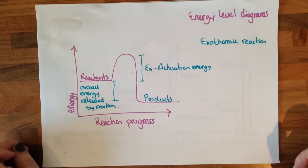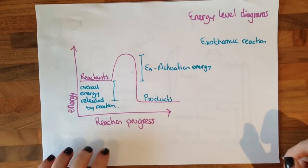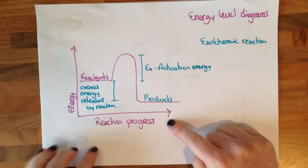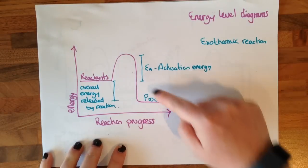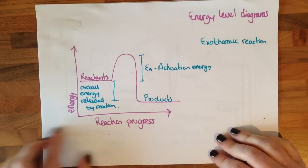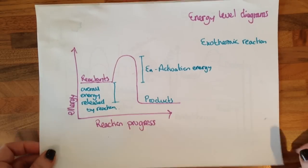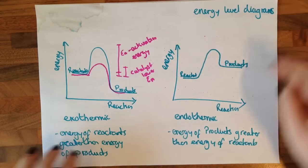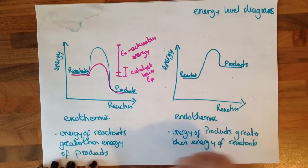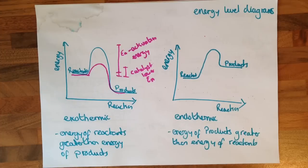You need to know your energy level diagrams. This is an example for an exothermic reaction — we have our reactants here, our products here, this is the reaction in progress, and this is the energy. This bit here is the activation energy and this bit here is the overall energy released by the reaction. In an exothermic reaction the energy of the reactants is greater than the energy of the products. In an endothermic reaction the energy of the products is greater than the energy of the reactants.